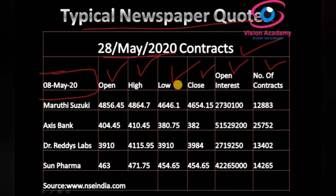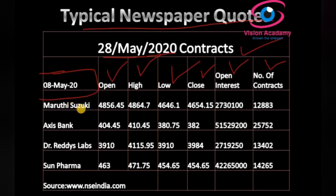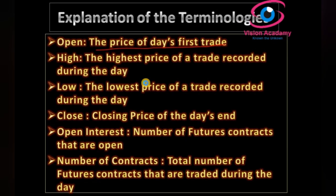Look at Maruti Suzuki, Axis Bank, Dr. Reddy's Lab, Sun Pharma. Typically, very important information will be given in the newspaper: Open, High, Low, Close, Open Interest, and Number of Contracts — these six elements are very important for one to understand whether to make an investment decision. The first element is Open — the price of the day's first trade. When trading time starts on the NSE, this is the price from which the company stock started trading. That is the price of the day's first trade, designated as the opening of the market.